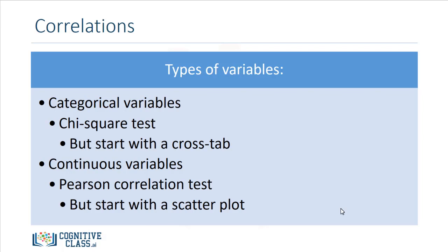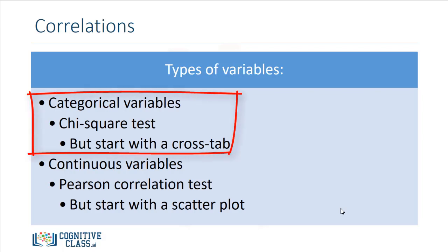we have instructors who are male and female, and some instructors are visible minorities and some are Caucasian. So we have these two variables — male and female, and visible minority status — and these two variables are categorical. If we are comparing or trying to determine the correlation between two categorical variables, we would use a chi-square test, and we would begin with a cross-tabulation between the two values.